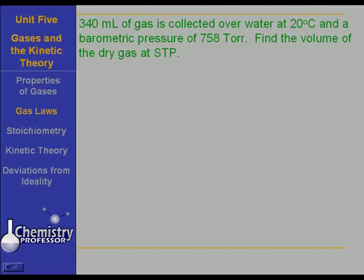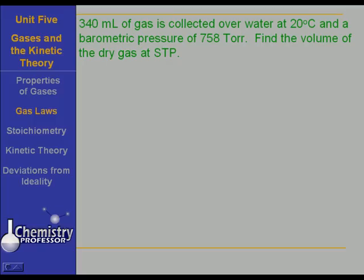Now in this problem, we have 340 milliliters of gas collected over water at 20 degrees Celsius and a barometric pressure of 758 torr. Remember that 758 torr is the sum of the vapor pressure of water and the pressure of whatever that gas is.